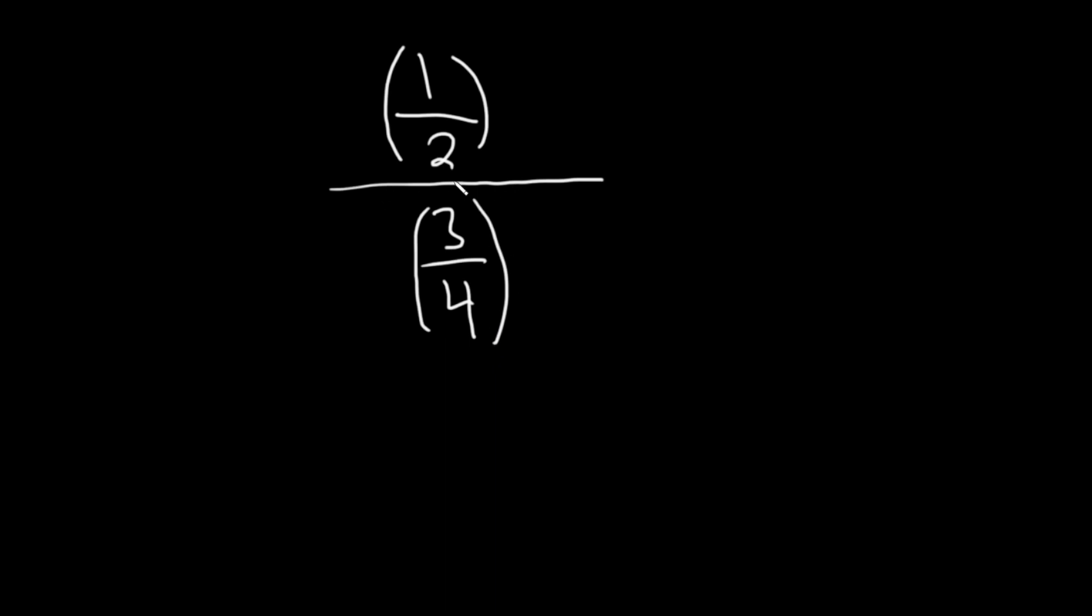So this is the division symbol. So whenever you divide, you are supposed to multiply by the reciprocal. Okay, so this is the same thing as 1 half times, and then you just find the reciprocal of 3 fourths. So you just flip it. So 4 thirds.